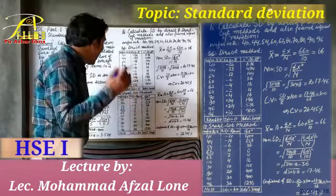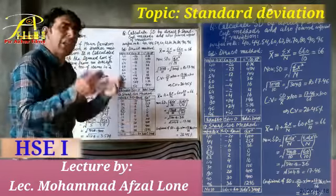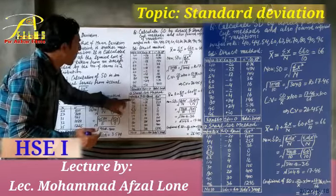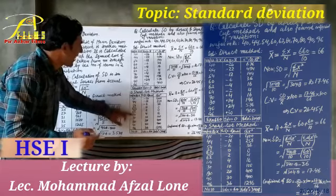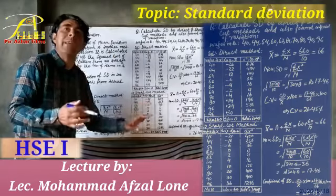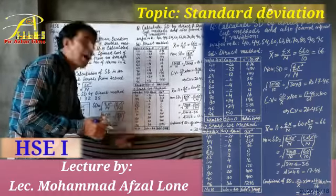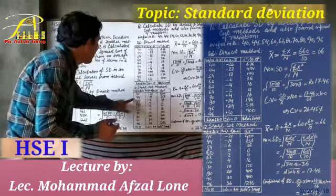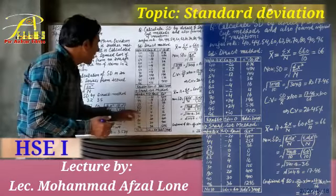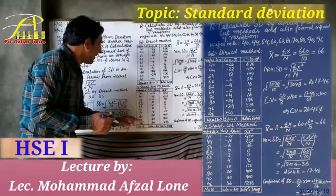Now we have the shortcut method. Remember, we are using the assumed mean here instead of the actual mean. The same values are: 40, 44, 54, 60, 62, 64, 70, 80, 90, 96. We are taking 60 as the assumed mean, and subtracting 60 from each value of x: 40−60=−20; 44−60=−16; 54−60=−6; 60−60=0; 62−60=2; 64−60=4; 70−60=10; 80−60=20; 90−60=30; 96−60=36.